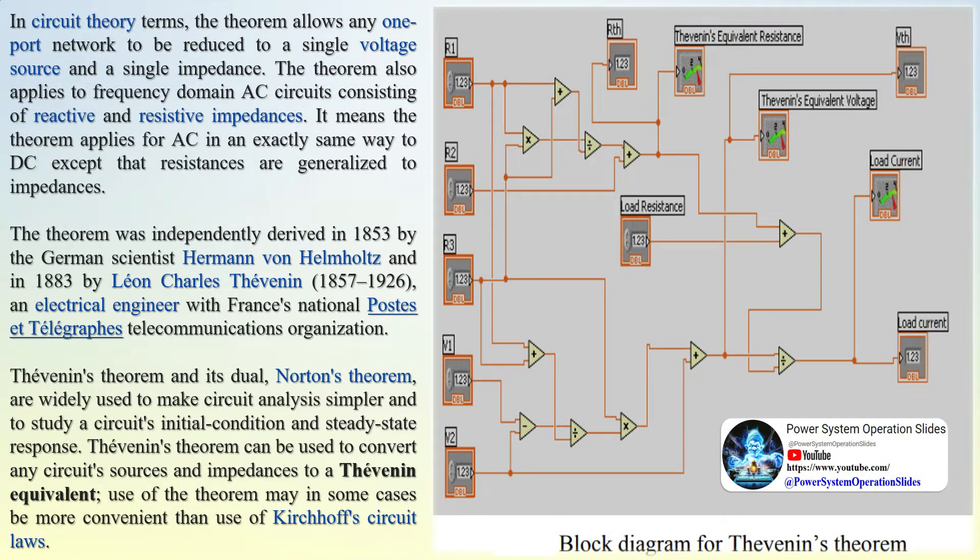As noted, Thevenin's theorem was first discovered and published by the German scientist Hermann von Helmholtz in 1853, four years before Thevenin's birth. Thevenin's 1883 proof, described above, is nearer in spirit to modern methods of electrical engineering, and this may explain why his name is more commonly associated with the theorem.